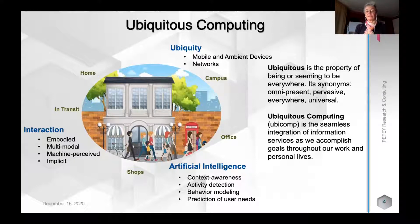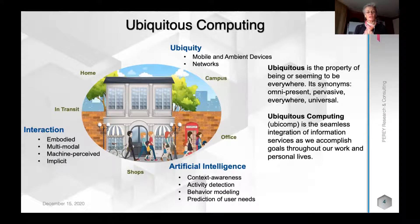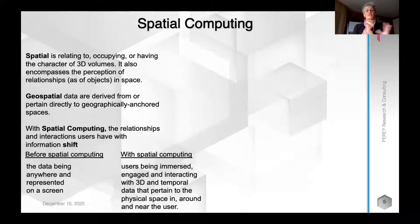Just to set the context correctly: ubiquitous computing is something that is everywhere — pervasive and universal. It's a seamless integration of information as a service that can help us in our lives and perform our jobs. It includes the concept of ambience and being everywhere pervasive. It's interactive and uses many advanced technologies in artificial intelligence. Spatial computing is a special type of ubiquitous computing that pertains to 3D volumes — not just geospatial data, although geospatial data are an important type.